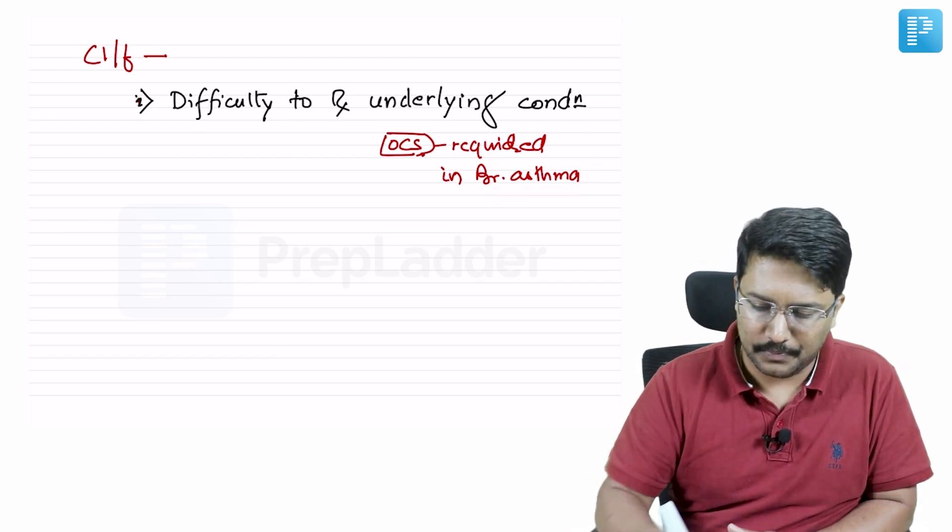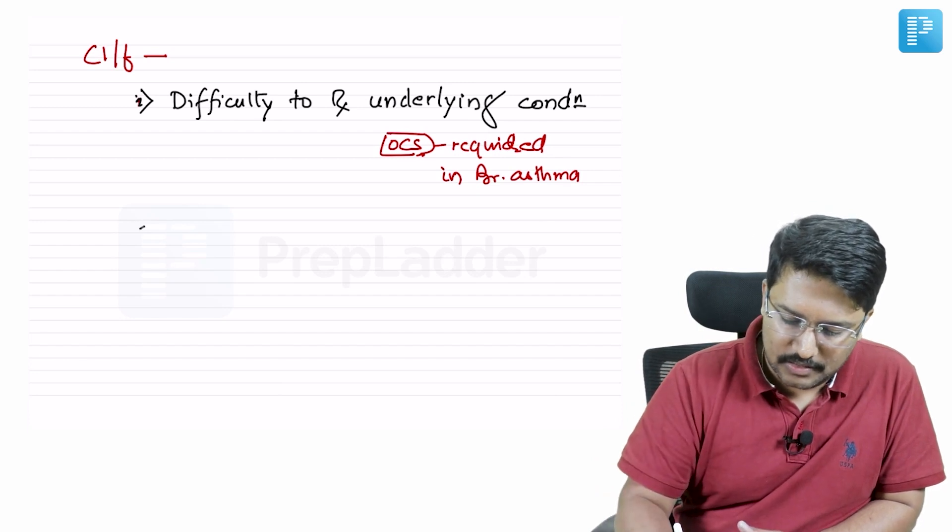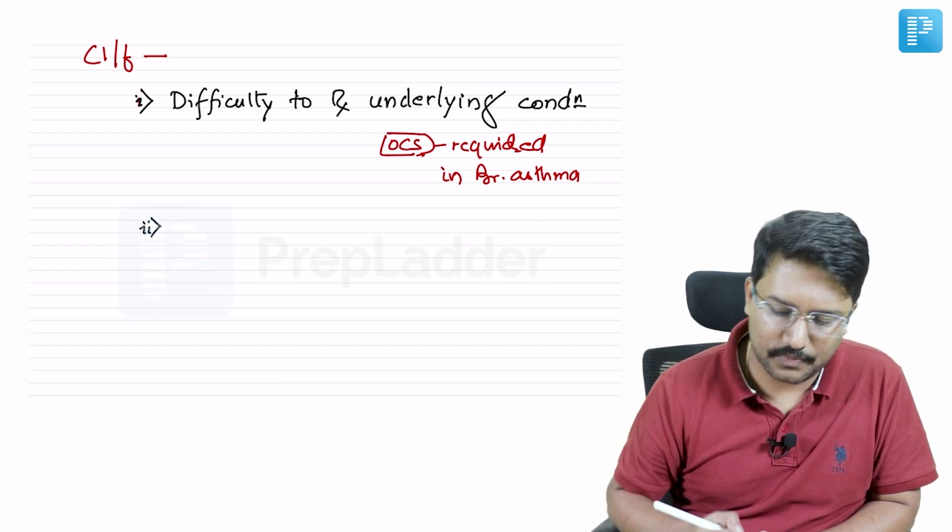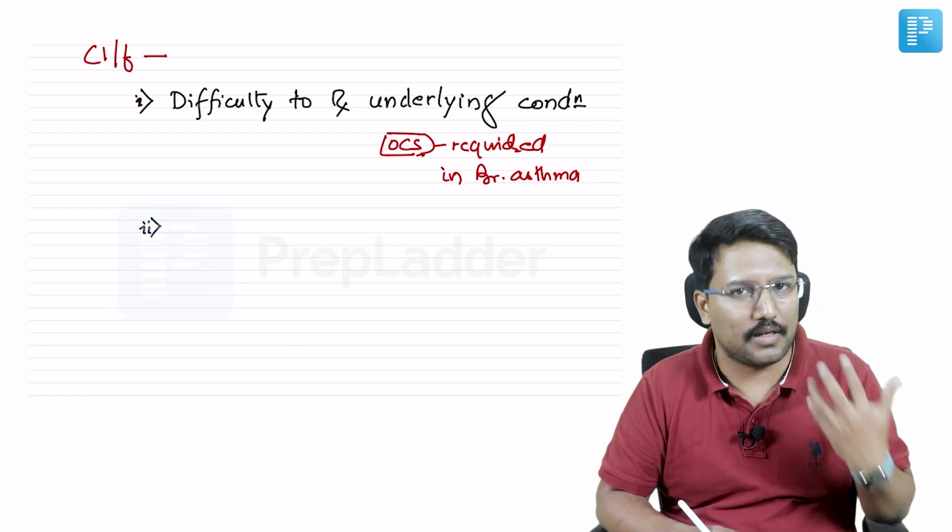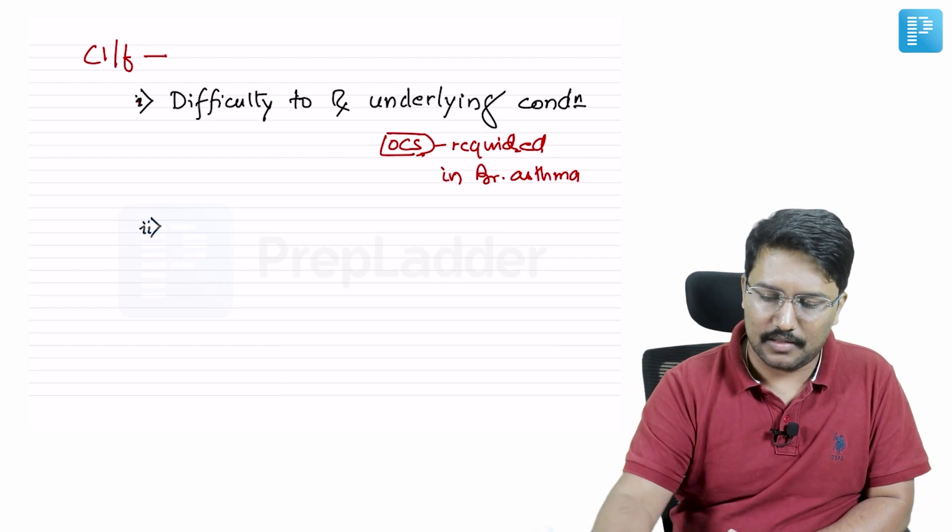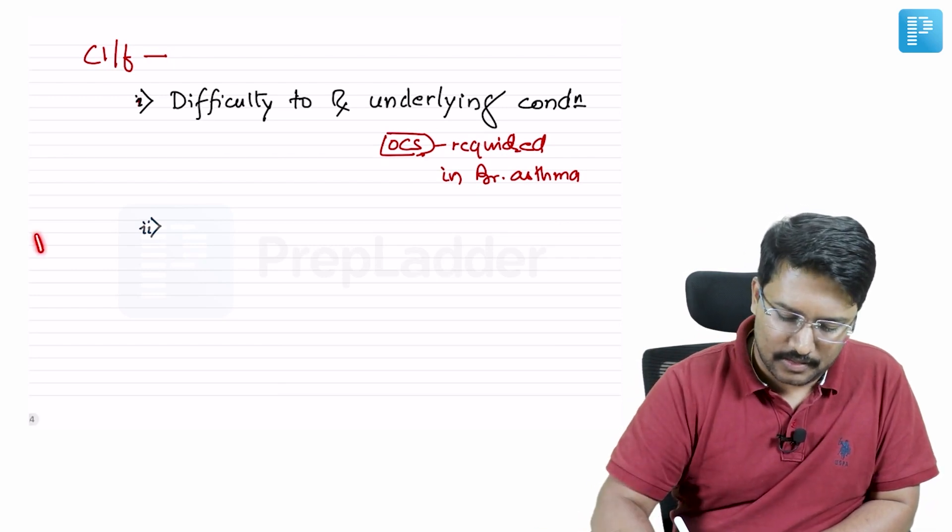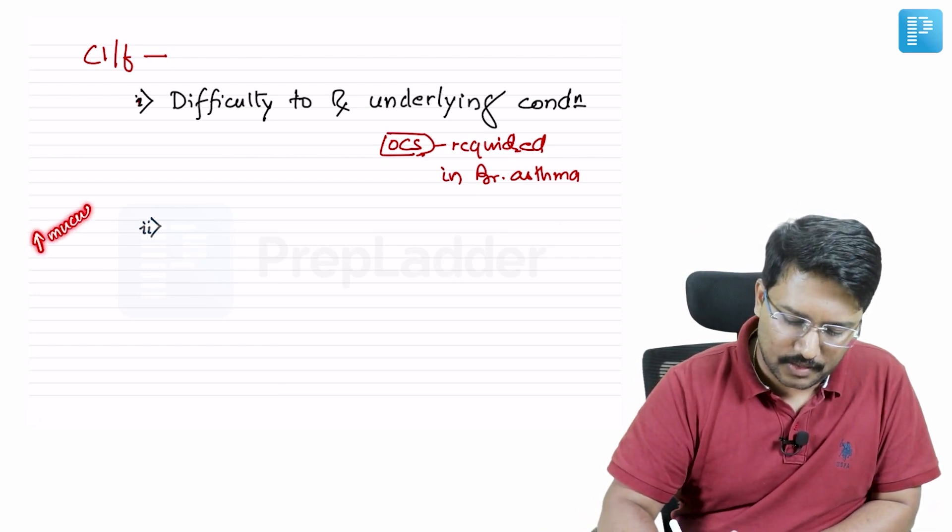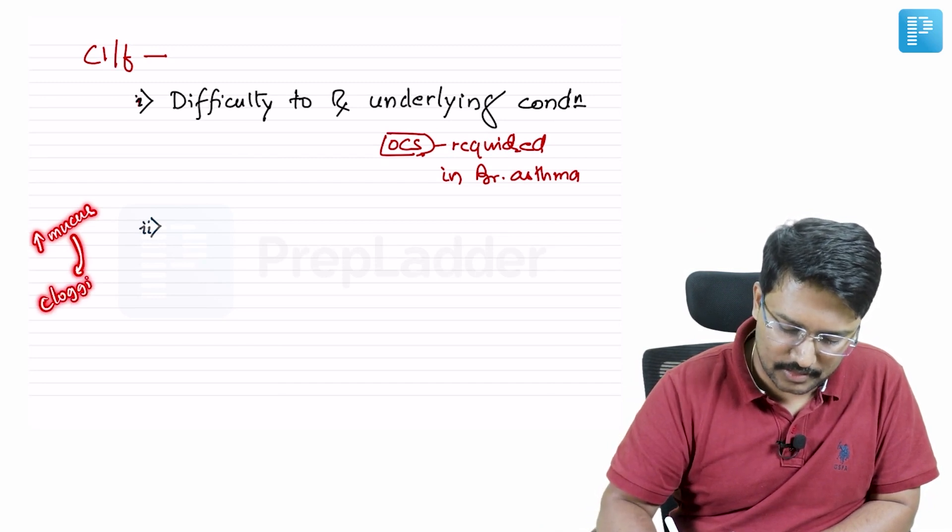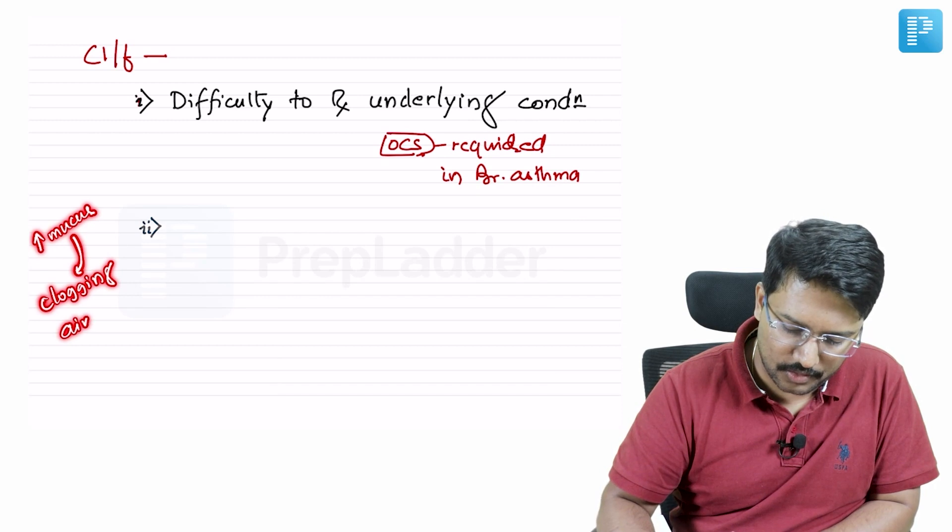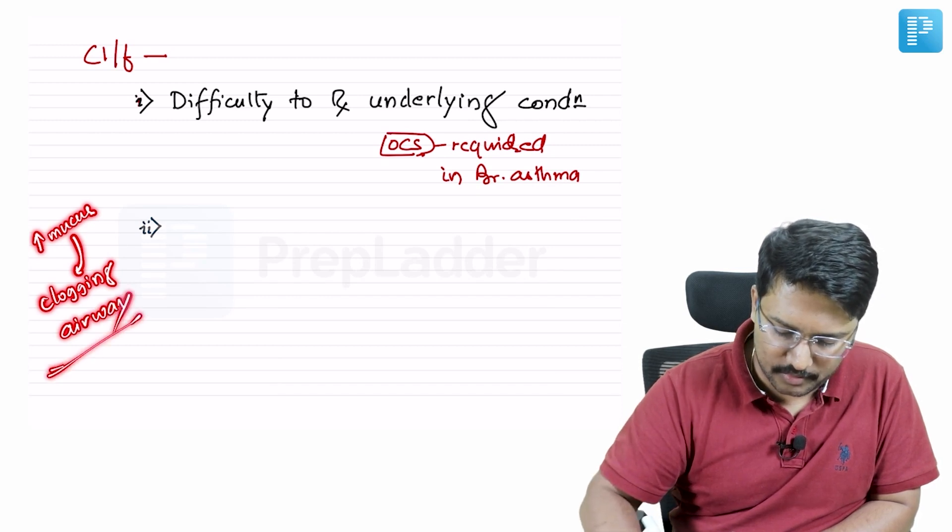Apart from that, the persistent baseline activity of the hypersensitivity reaction—when IgE is producing in large number and when there is eosinophilic inflammation—the end result is increased mucus production. This increased mucus production leads to clogging of the airway, mainly the bronchioles.